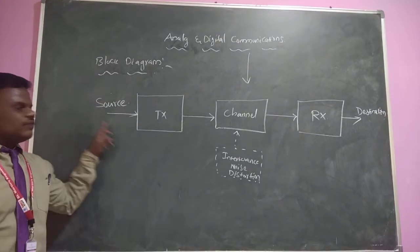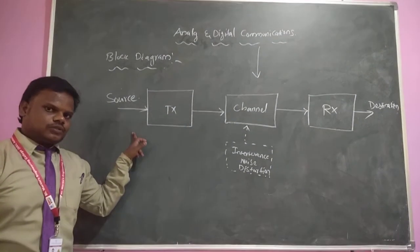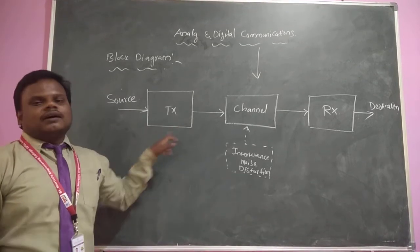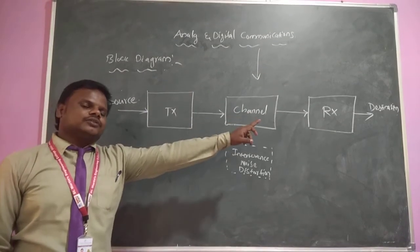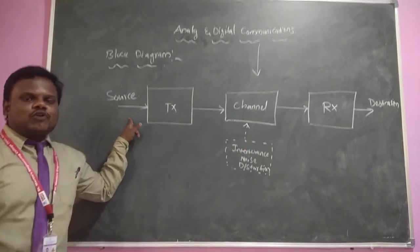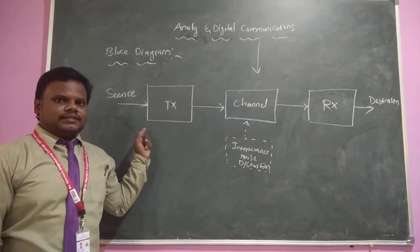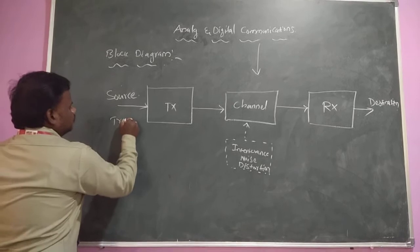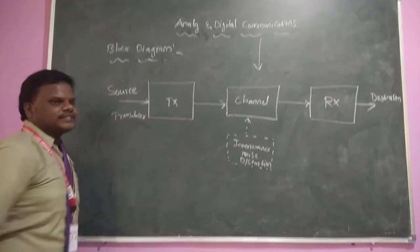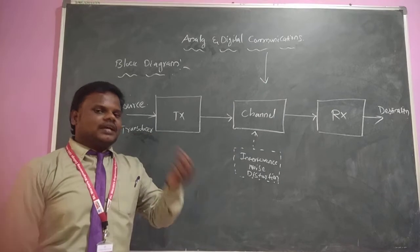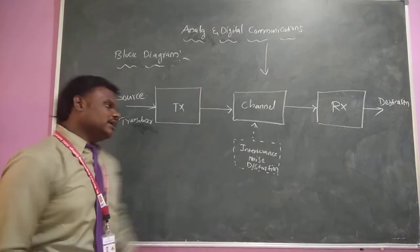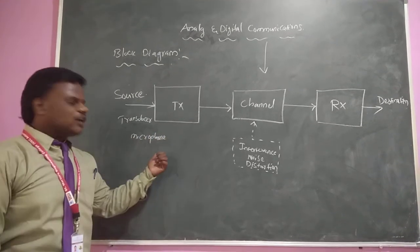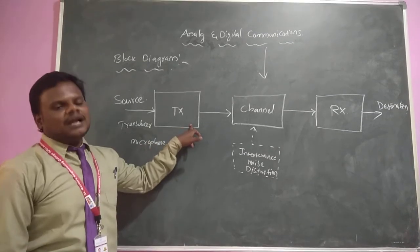So the basic communication system consists of, first of all, a source of information. For example, here my voice is the message and that message should be transferred over longer distances to the destination. First of all, my voice needs to be converted into an electrical signal. That process is performed by the transducer. For example, in voice communication, the voice signal needs to be converted into an electrical signal — this can be done by the microphone. The output of the microphone is an electrical signal and that will be given to the transmitter.